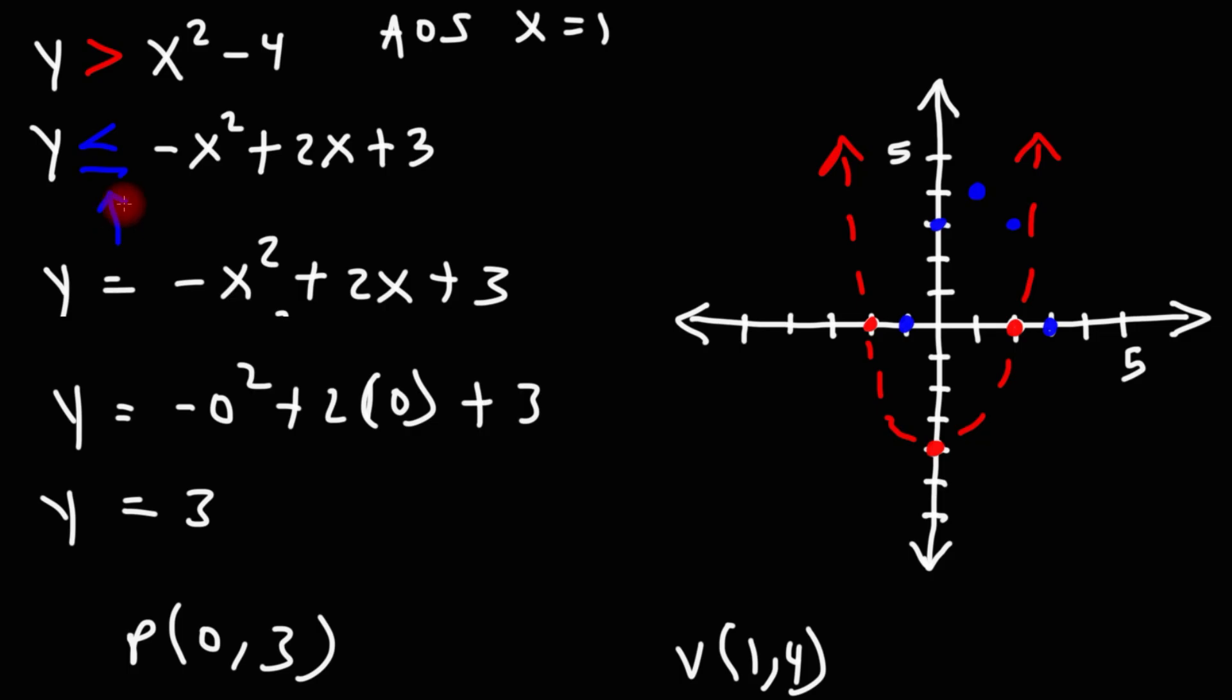Now, because it's not just less than, but it's less than or equal to, we're going to use a solid line as opposed to a dashed line to graph it. So now, we need to know where to shade the solution.